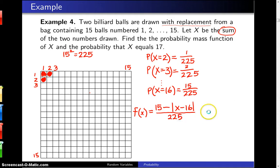And that is over the support X equals 2, 3, 4, all the way up to the largest you could get is down here in this corner, which is pulling the 15 ball on the first and on the second draw, and so your total for the sum here could be as high as 30.